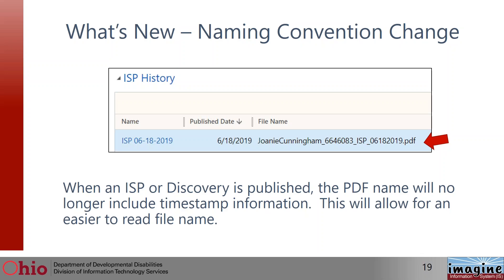And finally, a naming convention change: when an ISP or discovery is published, the PDF name will no longer include timestamp information other than the date — it won't include the minute or second it was run. It's just going to give you the date. Too much information made the name of the PDF much too long, so this will make it easy to read the file name.